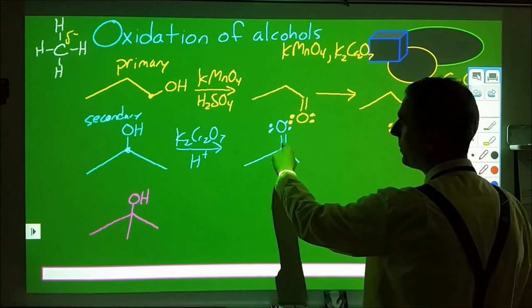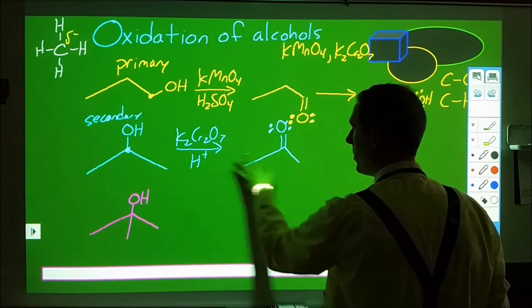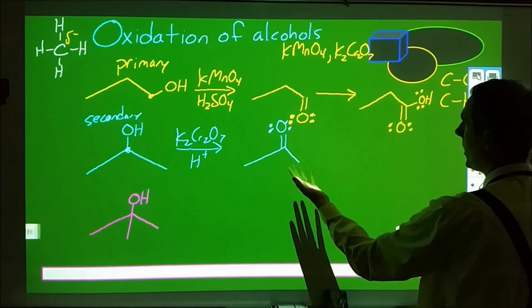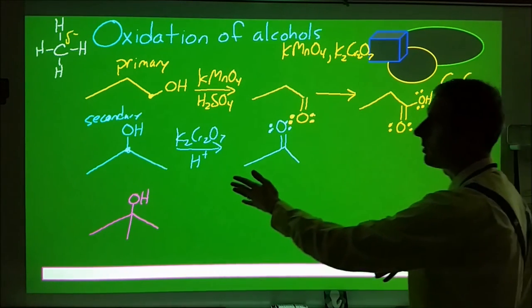At this point, we have two bonds to oxygens and two bonds to carbons. That's our four bonds, so there's no more hydrogens. If we continue to let this react, nothing else is going to change. We can't take it all the way to this fully oxidized state with this reagent.